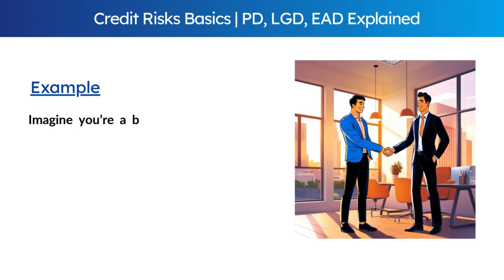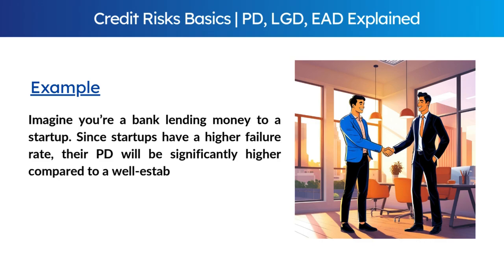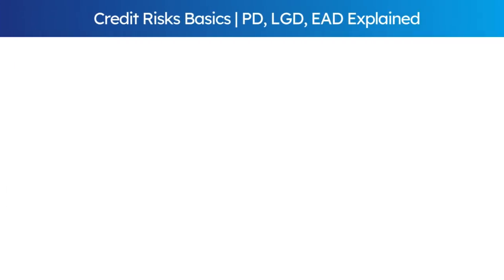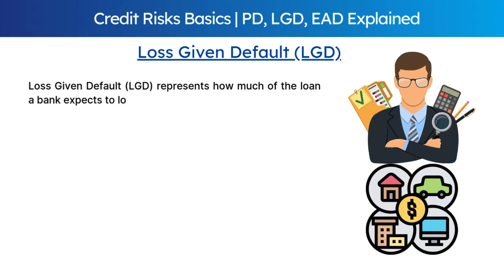Imagine you are a bank lending money to a startup. Since startups have a higher failure rate, their PD will be significantly higher compared to a well-established company. Now let's move on to our second component — loss given default — which represents how much of a loan a bank expects to lose if a borrower defaults.